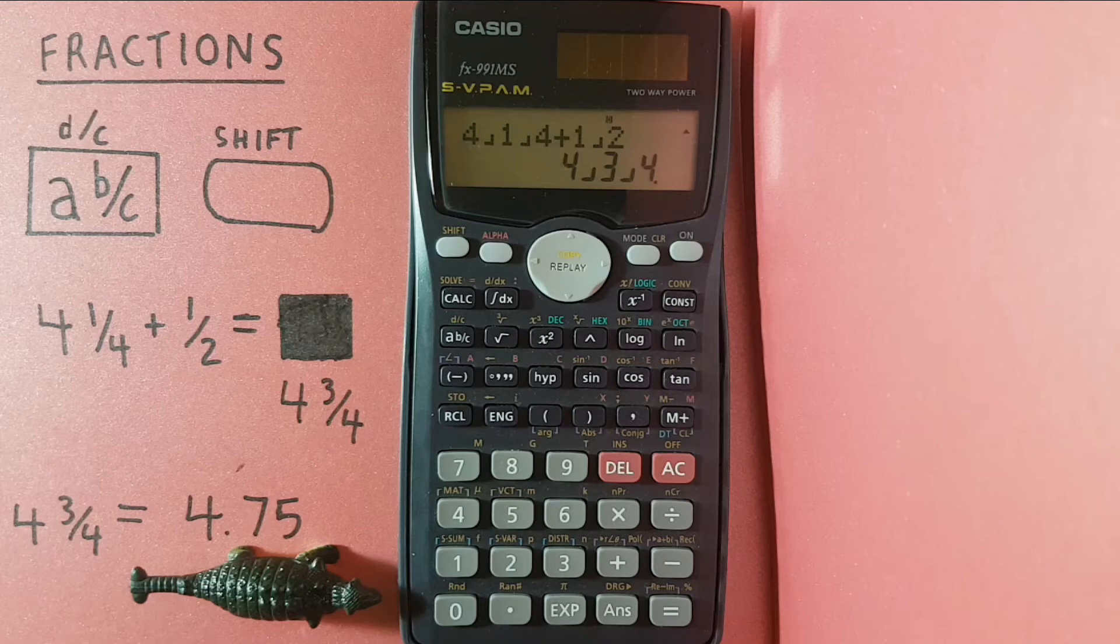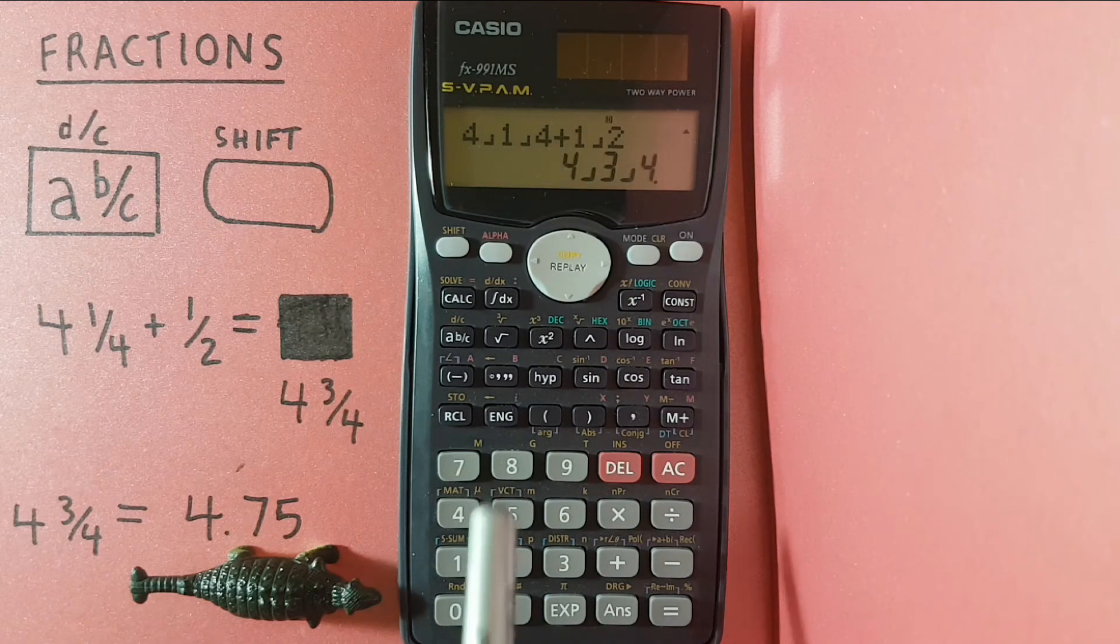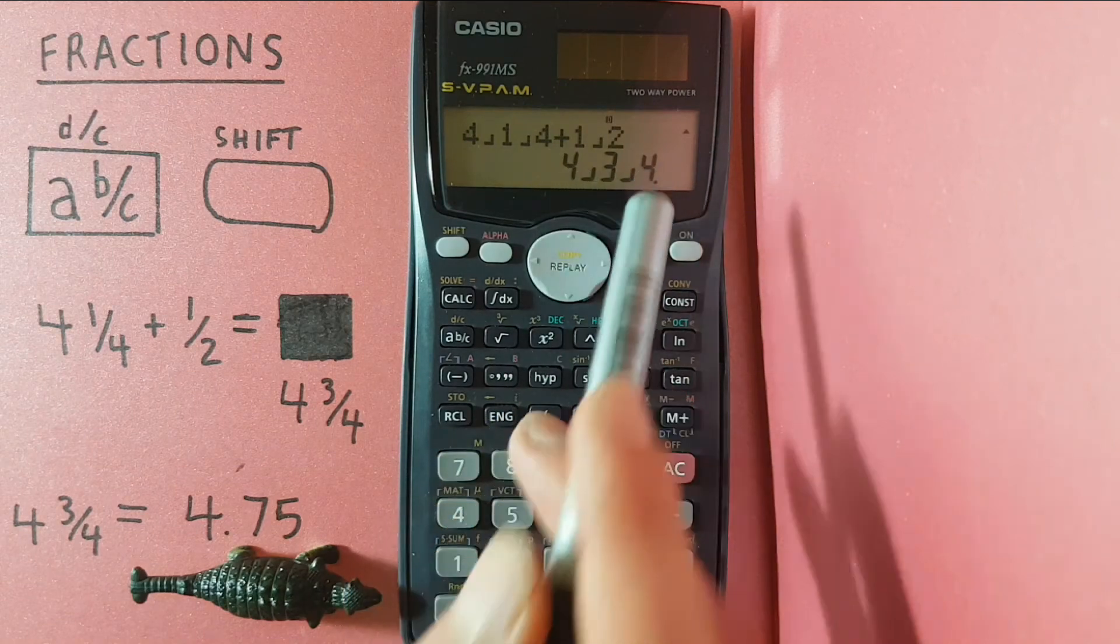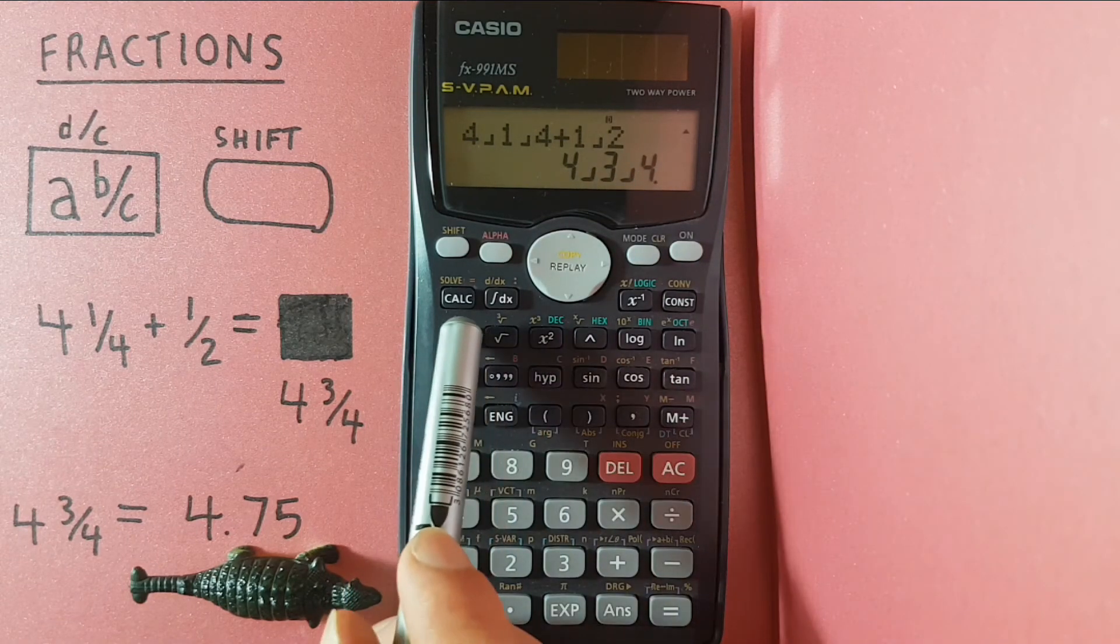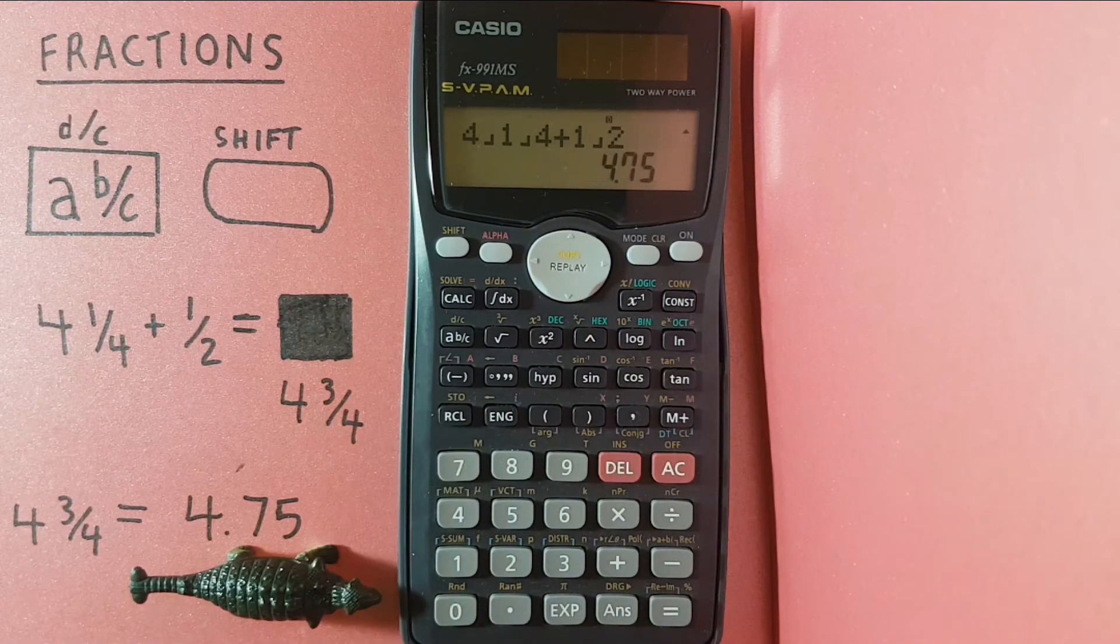We can also convert this to a decimal by hitting the A B over C key again while it's on the bottom of the screen to get 4.75.